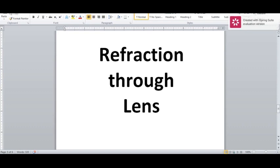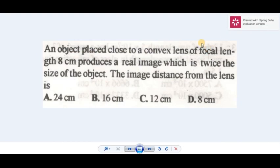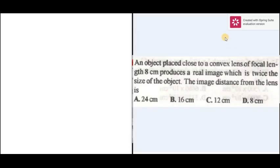Refraction through lens. An object placed close to a convex lens of focal length 8cm produces a real image which is twice the size of the object. The image distance from the lens is what we want to find.